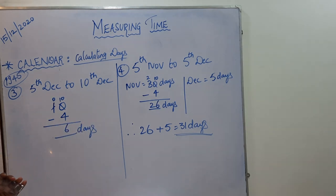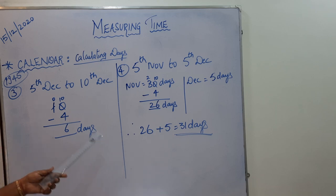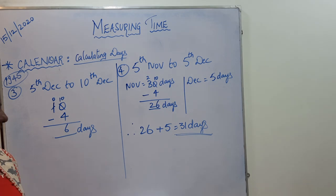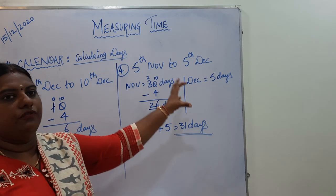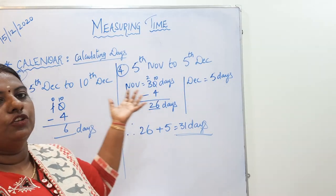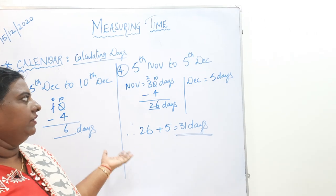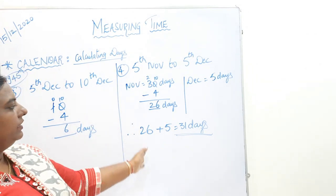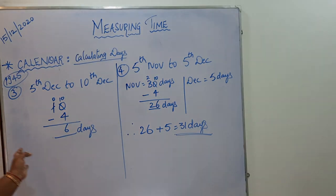Have you all understood how to calculate the number of days when both months are different? It is easy — calculate each month separately and add. Practice at home: think about your drawing class, music class, or newspaper orders at home, and calculate the number of days from the start date to the end date. Thank you, children.